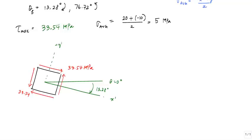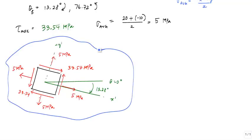The normal stress on all the sides is 5 megapascals, which means I have tension on each face. This is my maximum in-plane shear stress state. You'll notice that the 76.72 going counterclockwise is with respect to the horizontal. So this angle right here is 76.72 degrees.